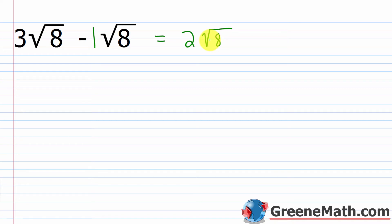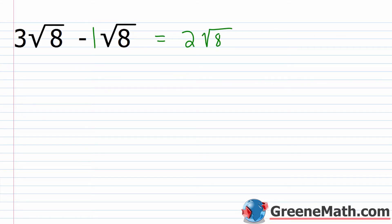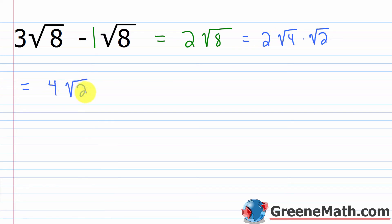In the previous example, we ended up with 7 times the square root of 10. I can't simplify that further because 10 is 5 times 2 — no perfect square underneath. But for 2 times the square root of 8: if I factor 8, I get 4 times 2, and 4 is a perfect square. So rewrite as 2 times the square root of 4 times the square root of 2. The square root of 4 is 2, so I have 2 times 2 times the square root of 2, which is 4 times the square root of 2.